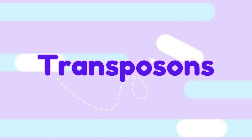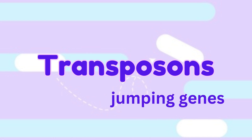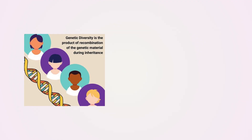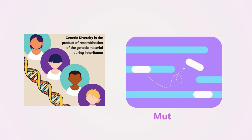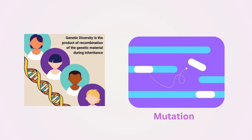Hello everybody, welcome back to our channel. Today we are going to talk about transposons, also known as jumping genes. Transposons play a crucial role in the evolution of the genome — they can create new genetic combinations by inserting themselves into new locations, which can lead to genetic diversity.